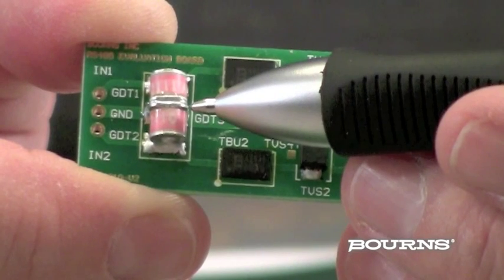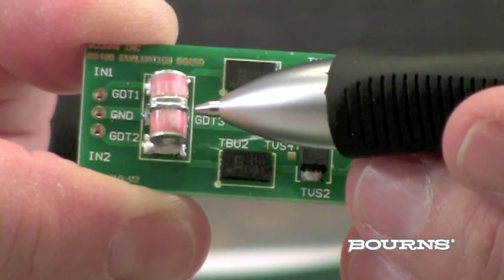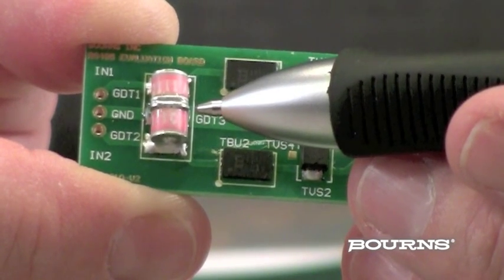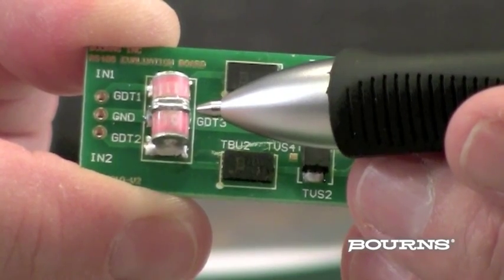The GDT's low sub-picofarad capacitance allows high-speed signals to pass unattenuated, while its high-current surge capability crowbars significant transients like lightning in this configuration.